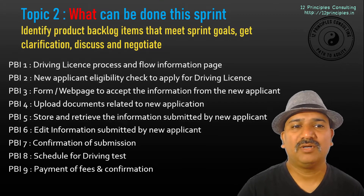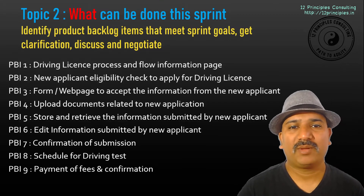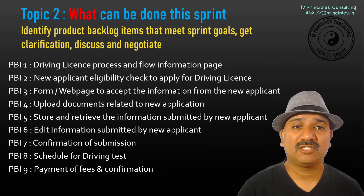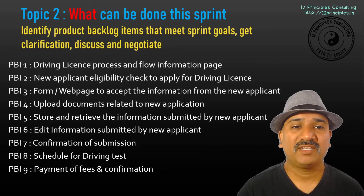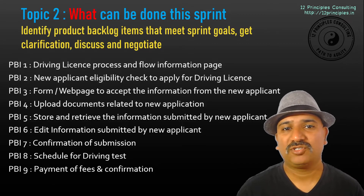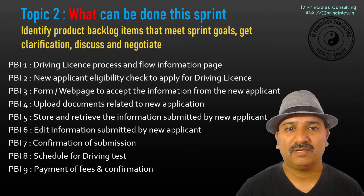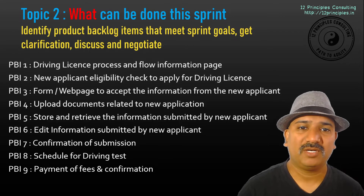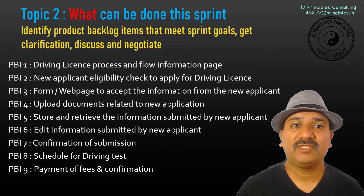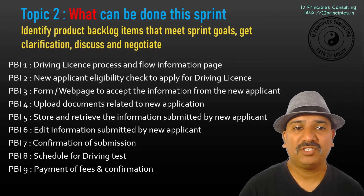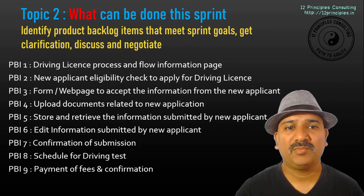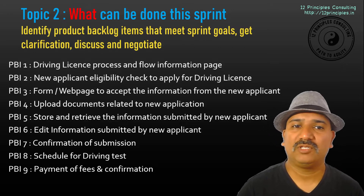Now that the team members have picked up the nine Product Backlog items which they potentially think will meet the Sprint Goal, this is just a forecasted list. The team members could potentially plan for nine and eventually finish with six or seven, which they inspect by end of the Sprint. They might also pick up the 10th, 11th, and 12th Product Backlog items if they finish earlier. There are no restrictions on team members picking up new items during the Sprint.